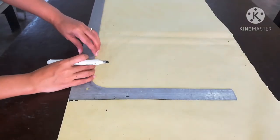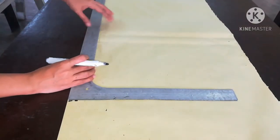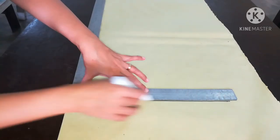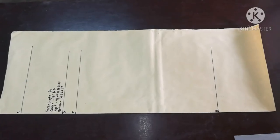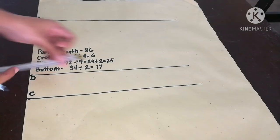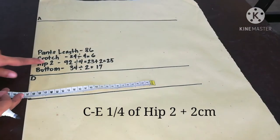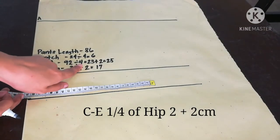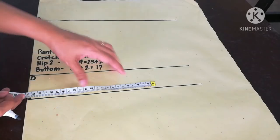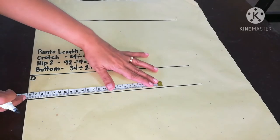And then point B. C to E is 1/4th of hip 2 plus 2 cm. In my example, it is 25 cm.